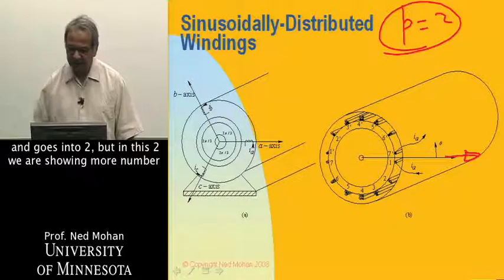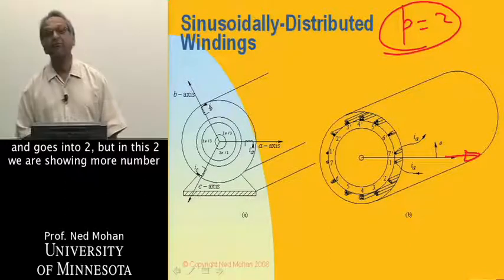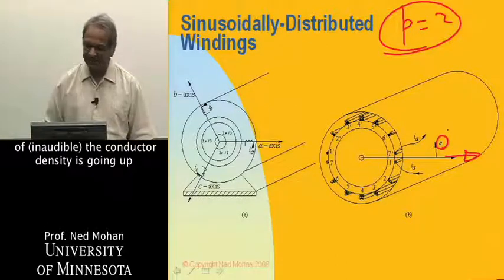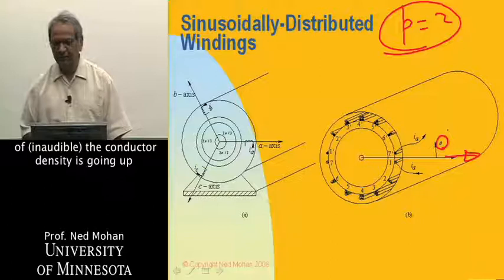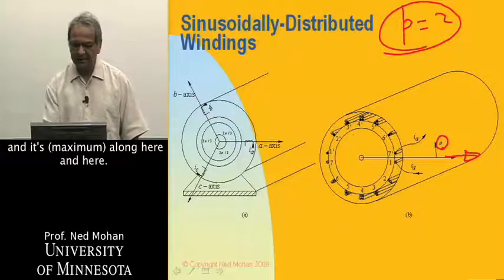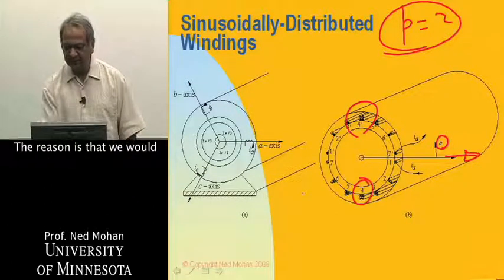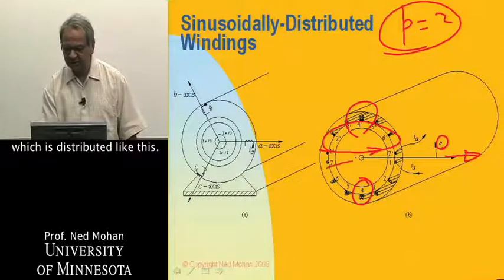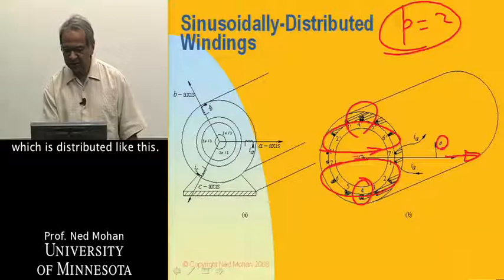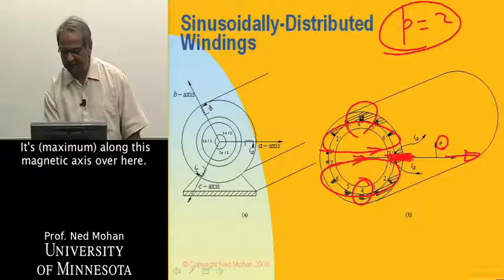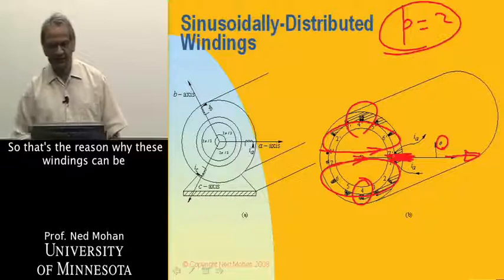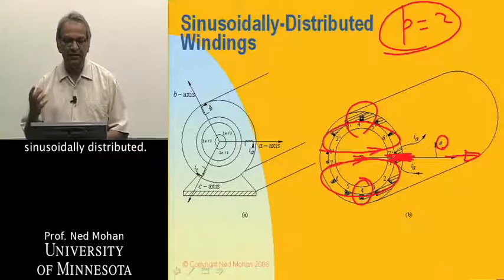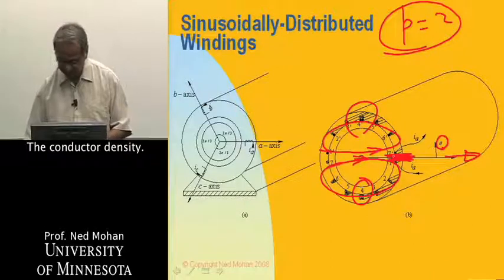and then comes out of one prime, then goes into two. But in this two, we are showing more number of conductors. So as a function of theta, the conductor density is going up, and its maximum along here and here. The reason is that we would like to produce a flux density distribution, which is distributed like this. It's a maximum along this magnetic axis over here. So that's the reason why these windings can be sinusoidally distributed, the conductor density.